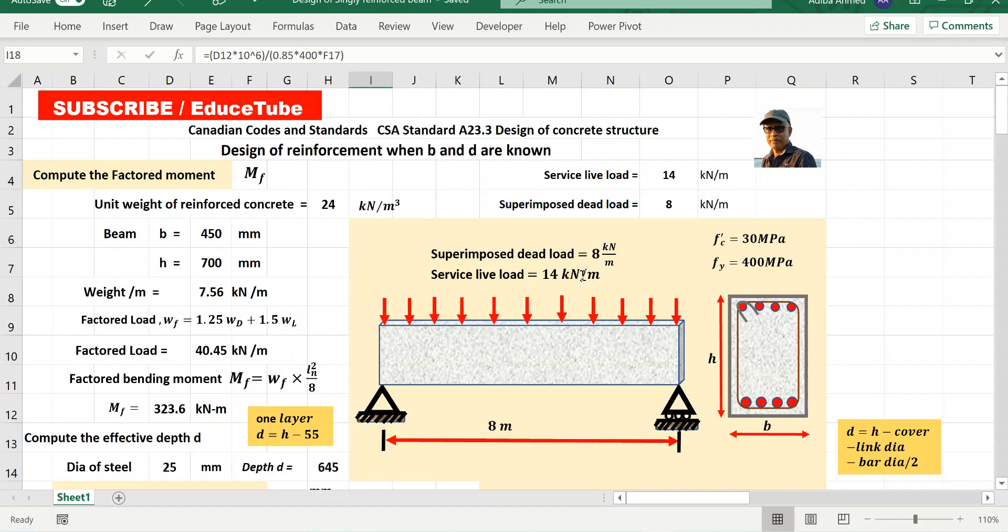And the strength of the concrete and steel are 30 MPa and for steel 400 MPa. In addition to the self weight of beams, it carries a specified dead load, say 8 kilonewton per meter.